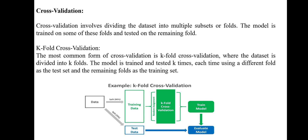The most common form of cross-validation is k-fold cross-validation, where the dataset is divided into k folds. The model is trained and tested k times. Each time, a different fold is used as the test set and the remaining folds are used as the training set.